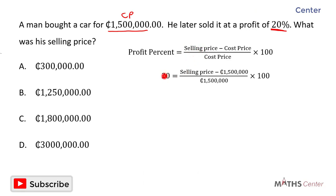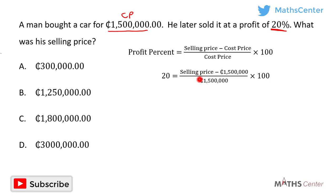We have 20 equals the selling price minus the cost price of 1.5 million CDs, divided by the cost price of 1.5 million CDs, times 100. This is a linear equation, so we solve for the selling price by multiplying both sides by 1 divided by 100.